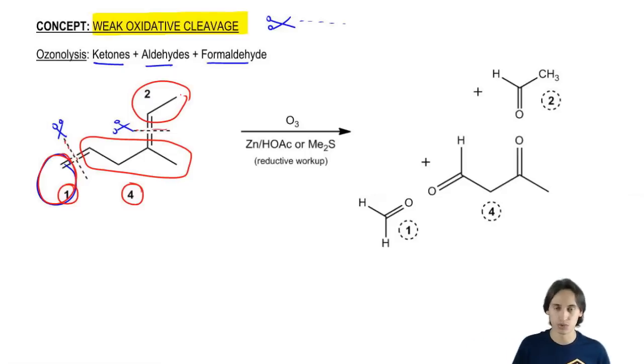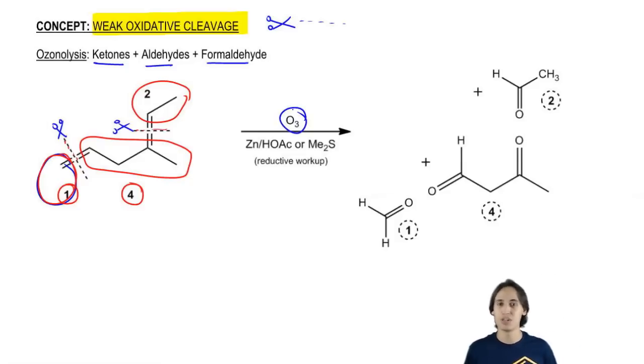Now let's look at the reagents really quick. The reagents are actually really easy for ozonolysis because it's always just going to be ozone. O3 is ozone. So anytime you see that, you know this is ozonolysis. Sometimes different professors use different reagents as the reductive workup. Some will use zinc and acetic acid. Some will use dimethyl sulfide. It doesn't really matter. Of course it's important for the mechanism later on, but it's not important for the products. Both are going to yield the same thing.